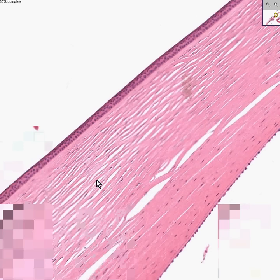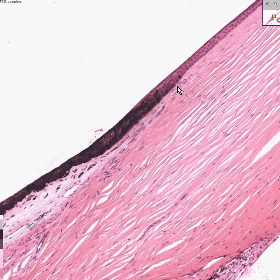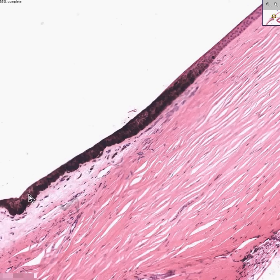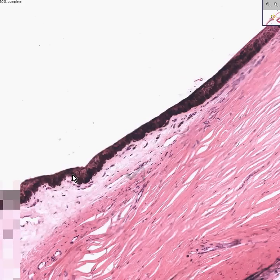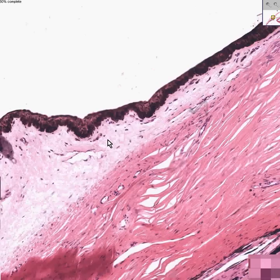Here we are traveling down the cornea now towards the limbus. And you can now see that the Bowman's epithelium is starting to get a little bit darker and more pigmented and is now turning into the conjunctiva of the cornea, also called the bulbar conjunctiva, because we are now in the scleral portion.